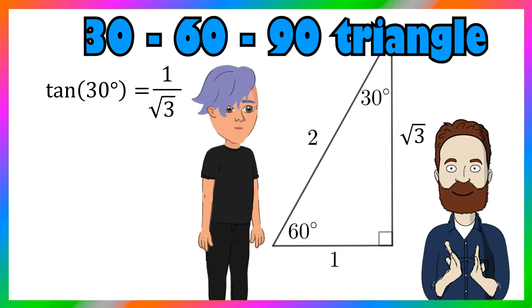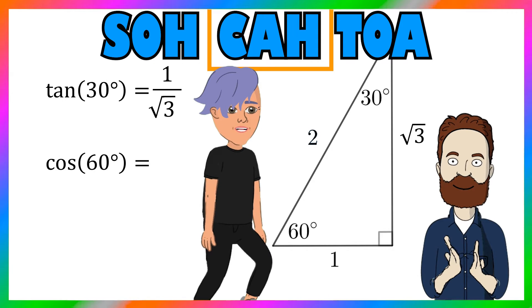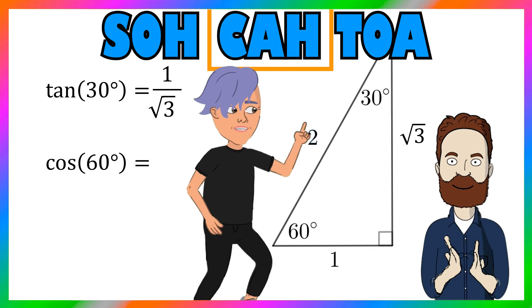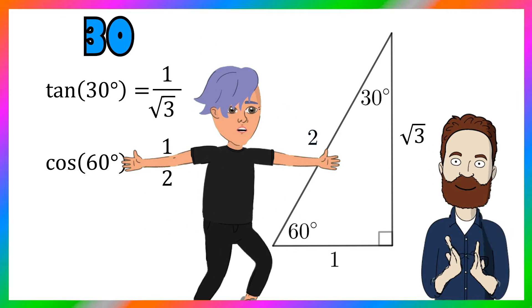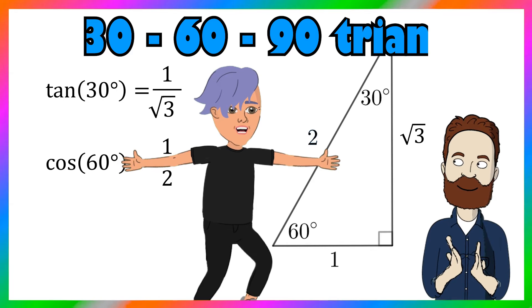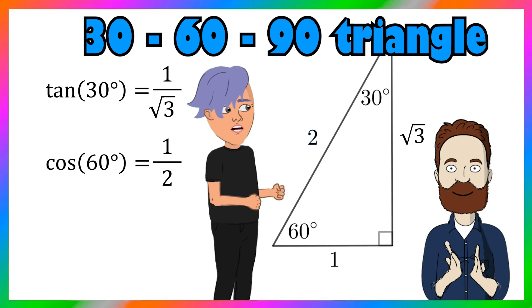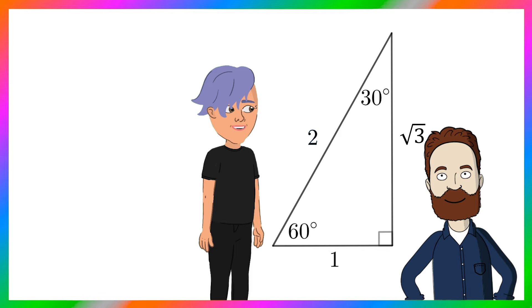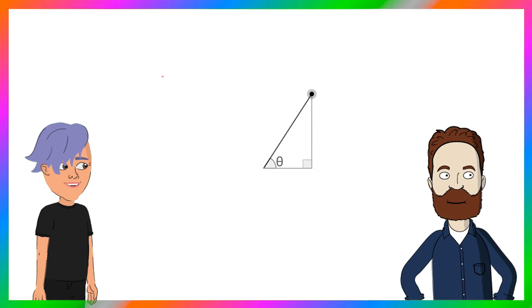So wake me up to the trig exact values. Cos of 60 is 1 over 2. With my 30, 60, 90 degree triangle, I know I know I won't be lost.